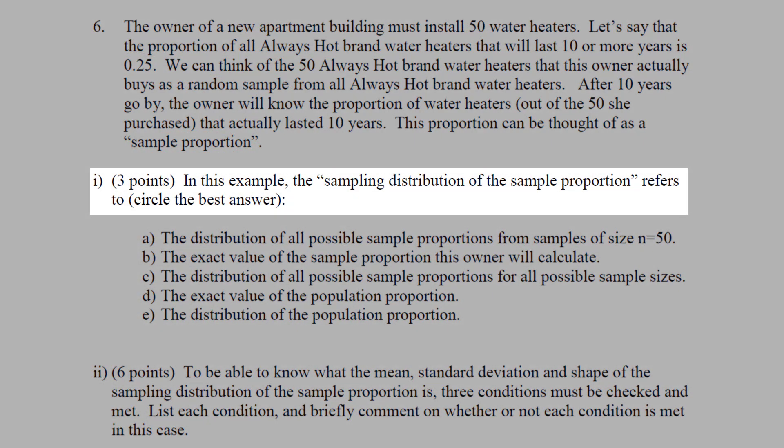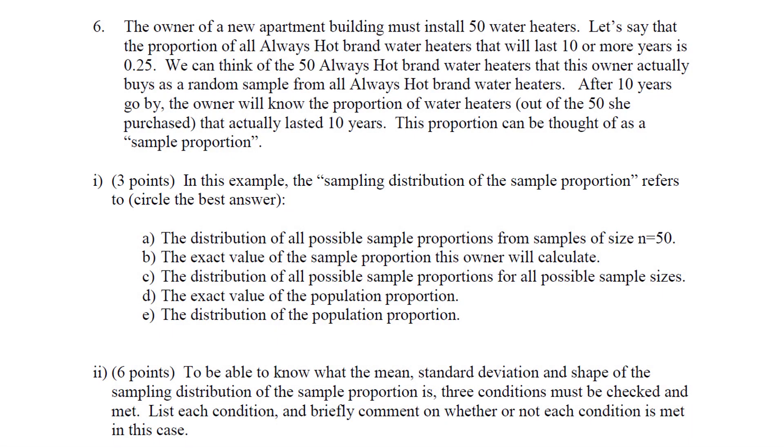In this example, the sample distribution of the sample proportion refers to - let's break it down for a moment. They're buying 50 water heaters from a company. They could have bought any random 50 water heaters. And because of that, the sample proportion they're getting right here is a sample proportion from the sample distribution of sample size equal to 50. So they'll find out the sample proportion that lasts in a sample size equal to 50, and this could have been any random sample of 50. So this means that the answer to the first part is A.